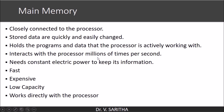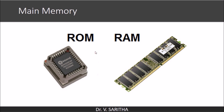For example, when you type something in a Word document or a presentation, what you type on the screen is stored in main memory. Once it is saved, it is permanently stored on the hard disk. That is why, if you are typing and power goes off in between, you lose the data — but if you save it, it is permanently stored and data is not lost. Main memory has two types: ROM and RAM.